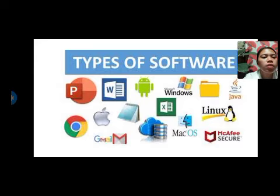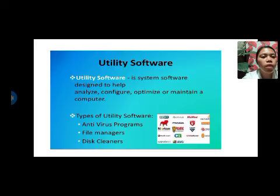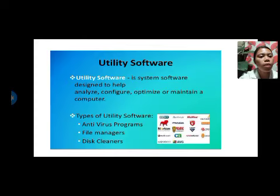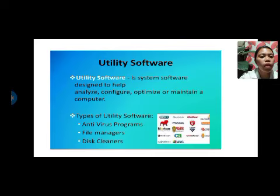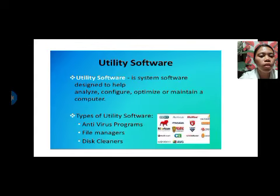Next are the types of software and their meanings. Utility software is a system software designed to help analyze, configure, optimize or maintain a computer. Types of utility software include antivirus, file managers, and disk cleaners.